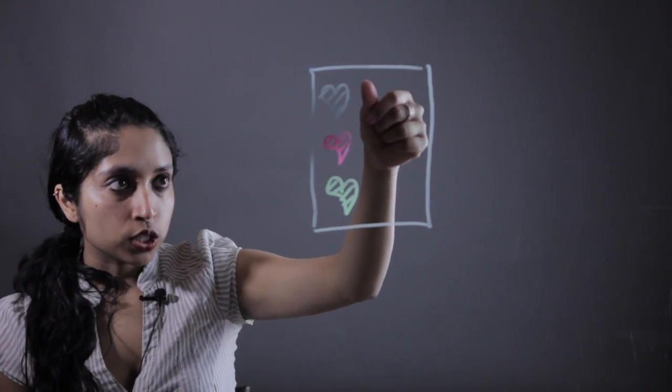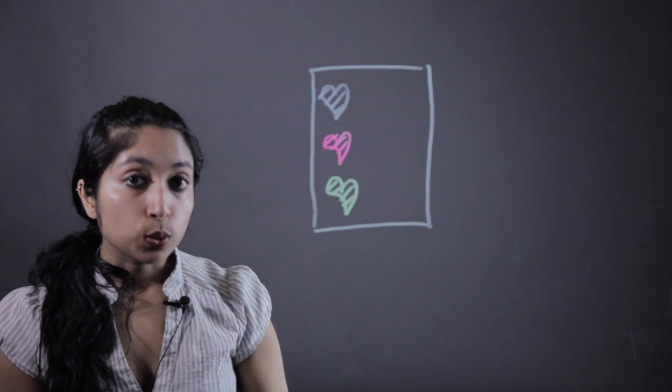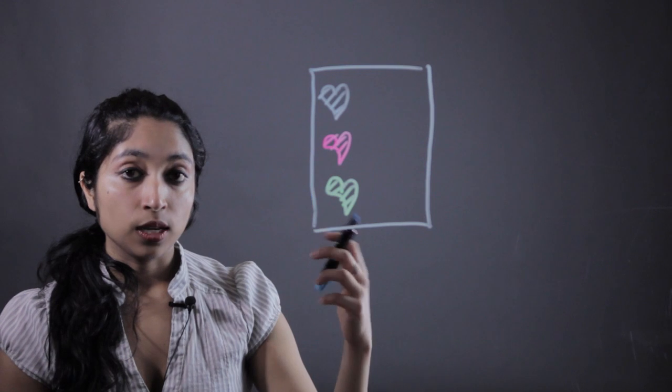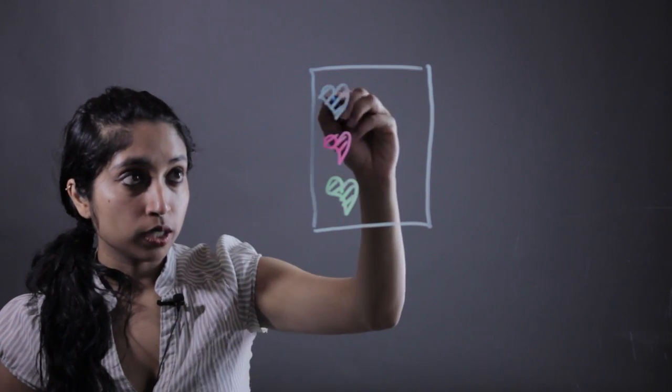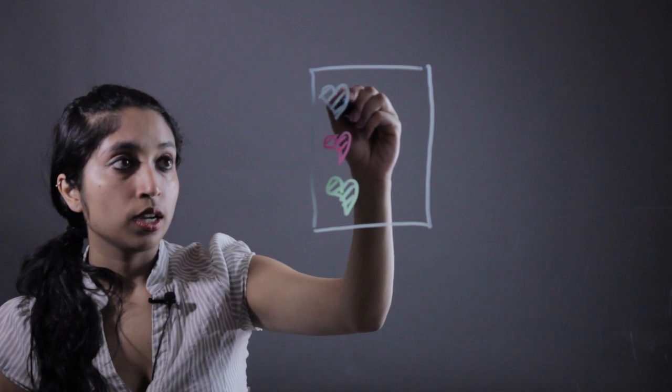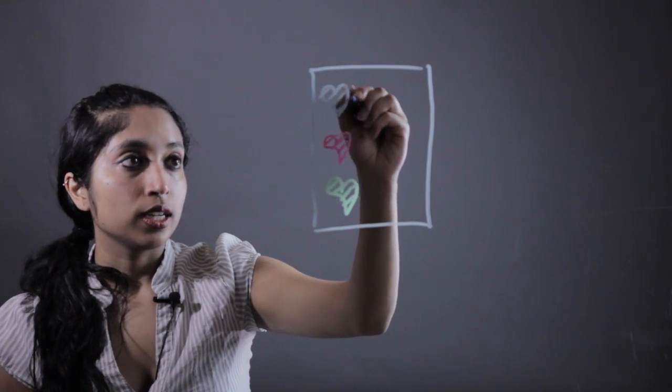So they're going to physically count out like one, two, three. Say they have three blue hearts, and then what they're going to do is take one of these fun little markers that you can write on laminated paper with and write the number three in the heart.